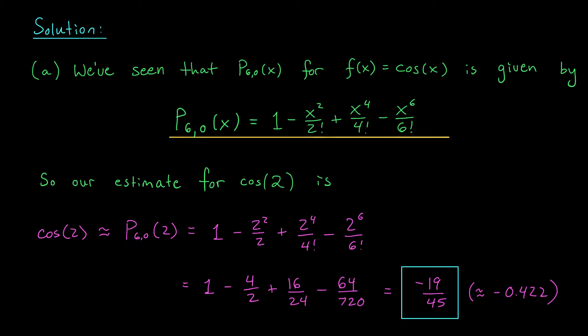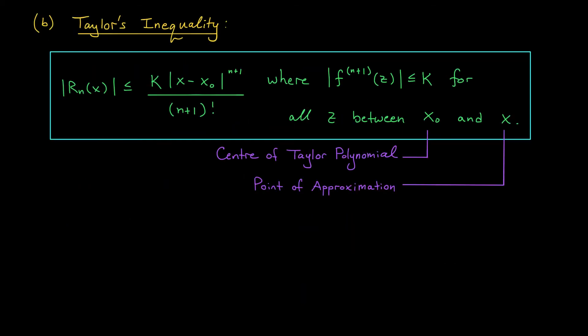To answer this question, we'll use Taylor's inequality. What does Taylor's inequality say about the size of the error in our approximation? Well, remember, it tells you that if you're trying to approximate a function f at a point x using the nth order Taylor polynomial centered at x0, then the size of the error term is no more than k, some constant, times the absolute value of x minus x0 to the n plus 1 divided by n plus 1 factorial. What's this constant k all about? Remember, k is some upper bound for the absolute value of your n plus 1st derivative. And that upper bound should work for all inputs z between the point where you've centered your polynomials and the point where you're trying to make the approximation.